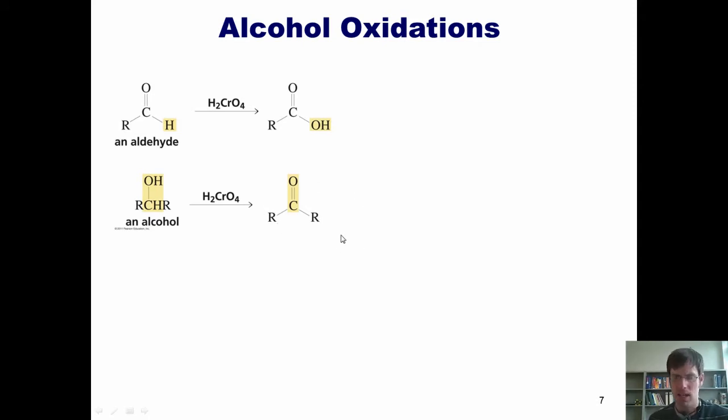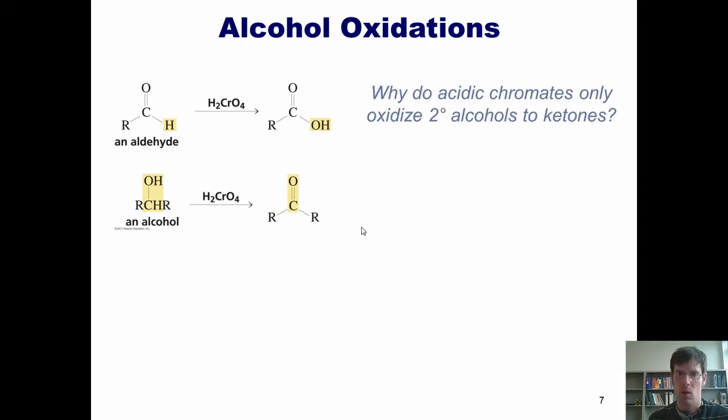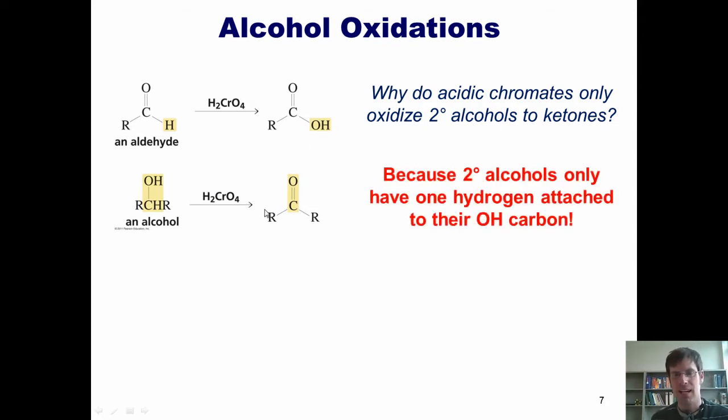So right here you might be asking, why? Why do acidic chromates only oxidize secondary alcohols to ketones, instead of oxidizing them all the way up to carboxylic acids? The answer is because secondary alcohols only have one hydrogen attached to their OH carbon. So you see this carbon that's stuck to an OH? It only has one hydrogen on it in a secondary alcohol. Therefore, you can only go up one bond to a ketone.